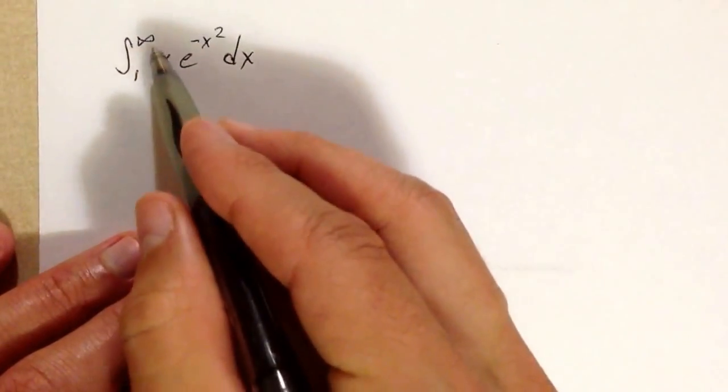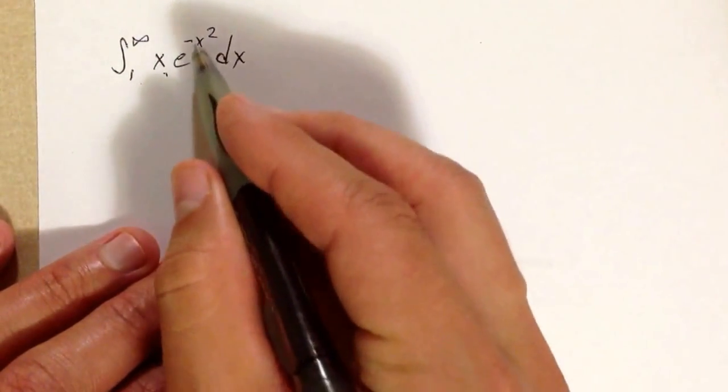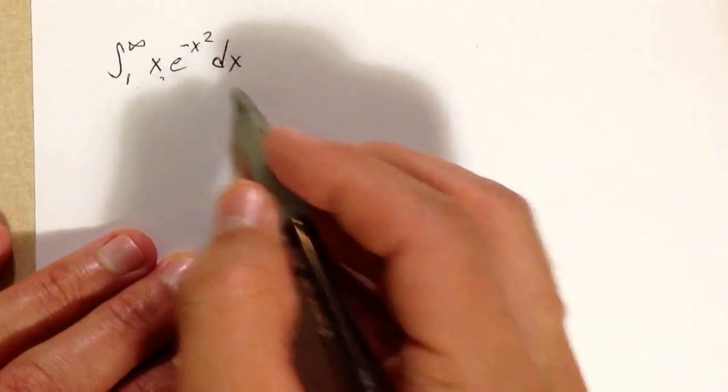Here's the improper integral from 1 to infinity: x e^(-x²) dx.